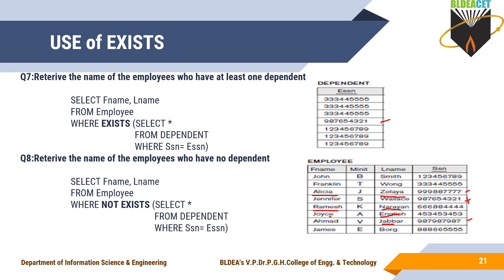So in the NOT EXISTS result, you get 4 employees who don't have dependents — their SSNs are not in the dependent table. This is how NOT EXISTS works.